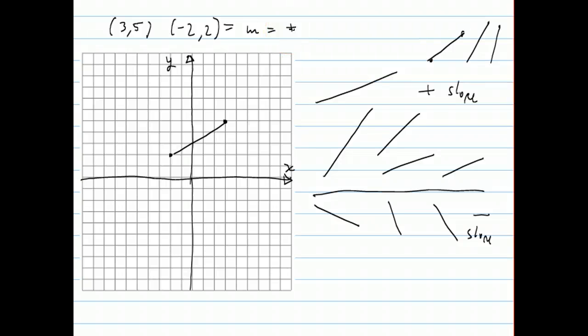To move to the right for every unit that it moves up. So what I can do is just count. It goes 1, 2, 3, 4, 5 to the right when it goes 1, 2, 3 up. So for every 3 up, it goes 5 to the right. And that's what slope is.